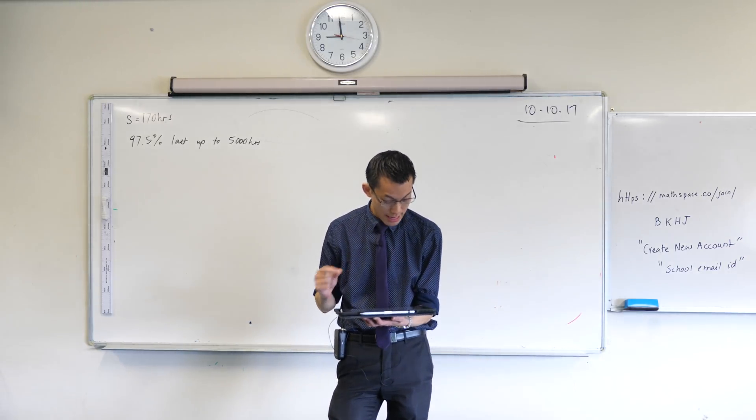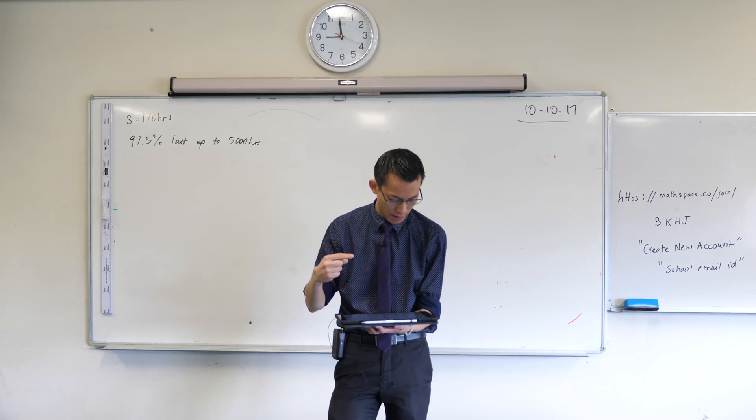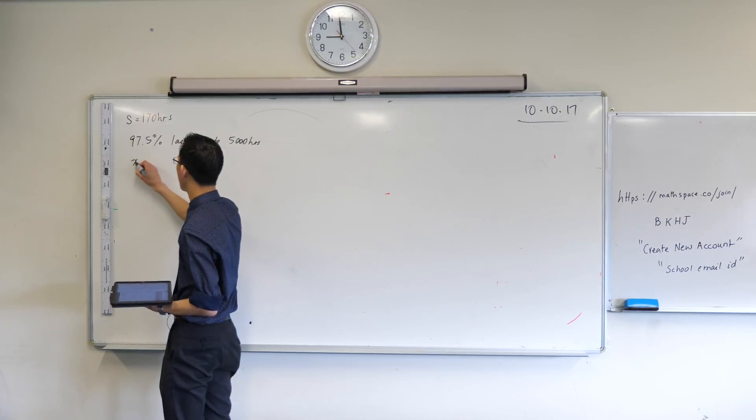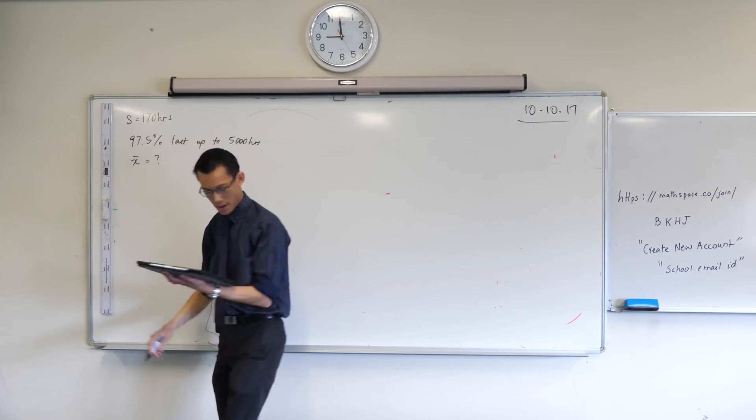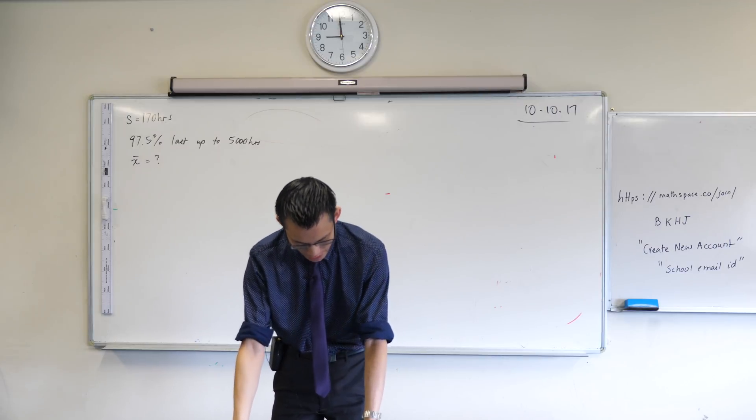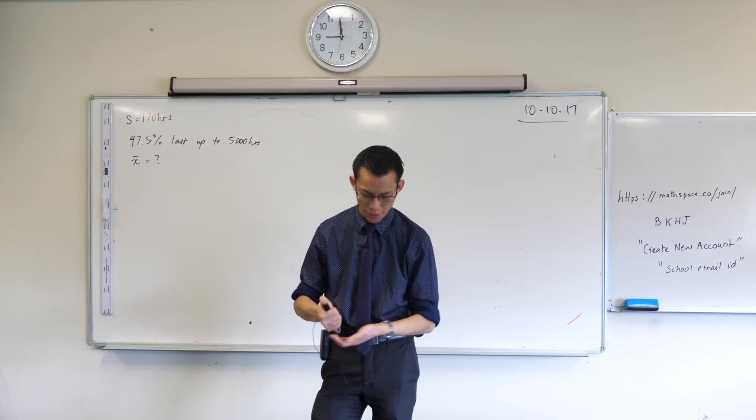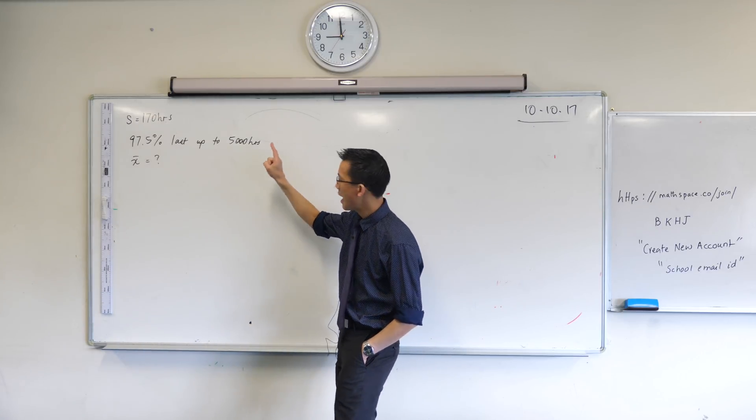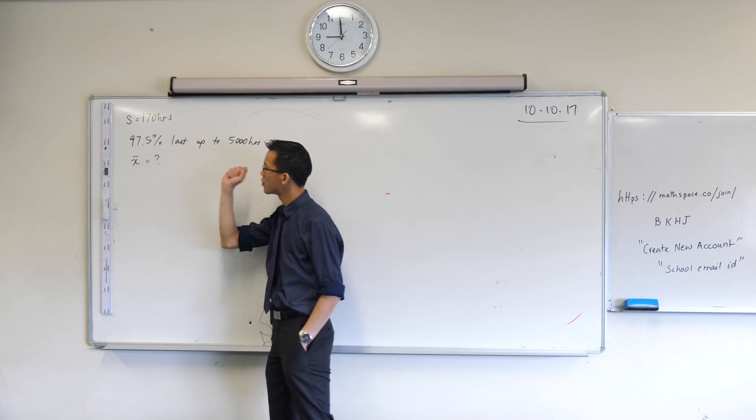The actual question is: what is the mean life? I should probably write that down. What we're after is the mean, X bar. What's the mean life in hours of these light globes if 97.5% of the light globes will last up to 5,000 hours? So that's this piece of information here.